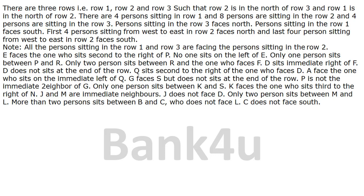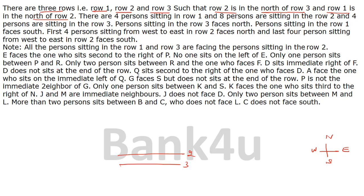As you can see, there are three rows: row 1, row 2, and row 3, such that row 2 is to the north of row 3, and row 1 is to the north of row 2. So row 1 is at the top, row 2 is in the middle, and row 3 is at the bottom.